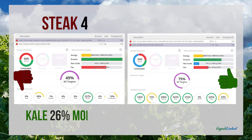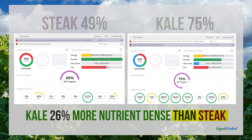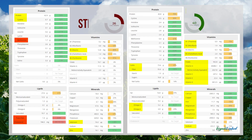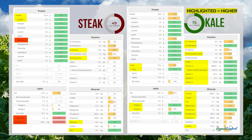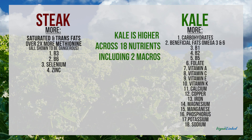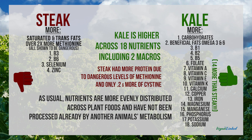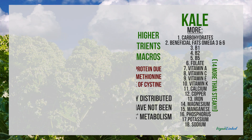Steak is only able to meet 49 percent of all nutrient targets, whereas kale meets 75 percent. Kale is 26 percent more nutrient-dense than steak. Kale was higher across 18 nutrients including two macros. Again on protein, it was almost the same except steak has more methionine and just a fractional amount more of cysteine.